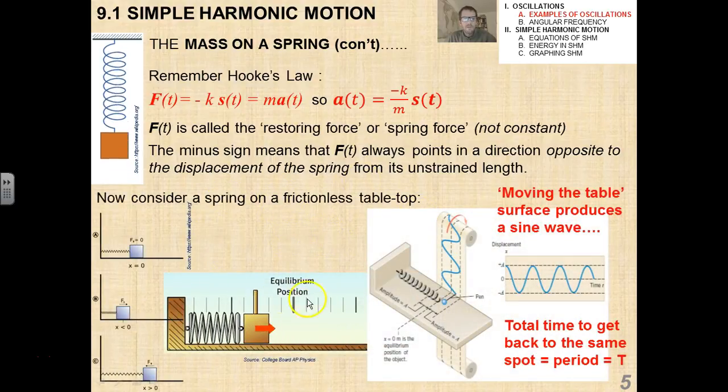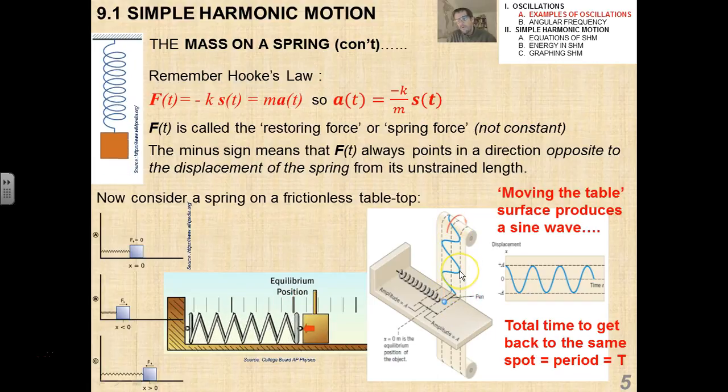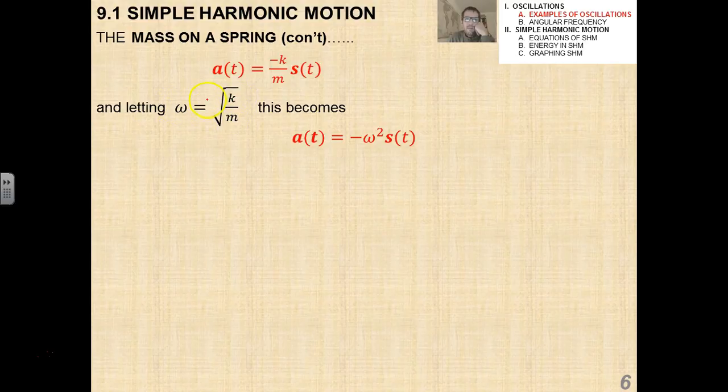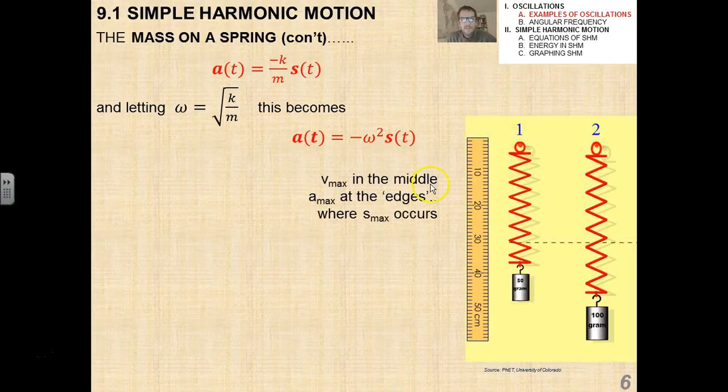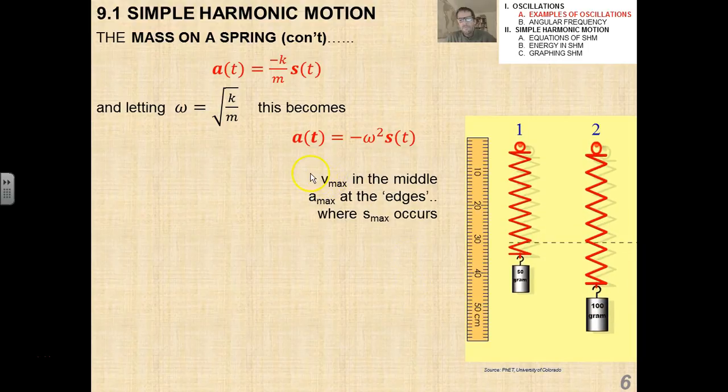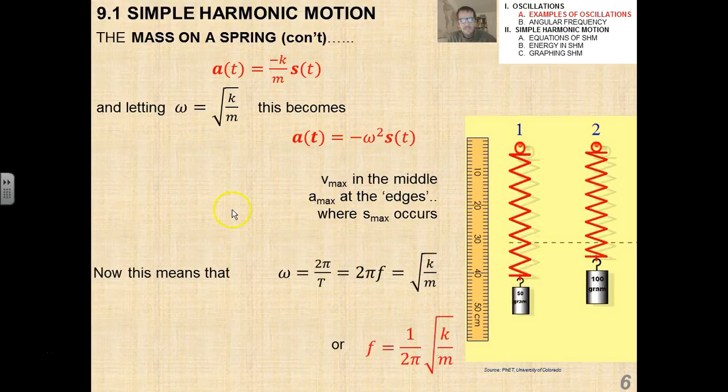If you consider a spring on a frictionless tabletop, it's the same thing. Right? And we've gone through this diagram before and this diagram before with a moving paper and a pen and all that kind of stuff. So a of t is negative K over m times s of t. If I let ω² equals K over m, or ω equals root K over m, which takes care of that negative sign, I have a of t equals negative ω² s of t. And you know from your studies before that there's a maximum velocity in the middle, maximum acceleration at the edges where the maximum displacement occurs.